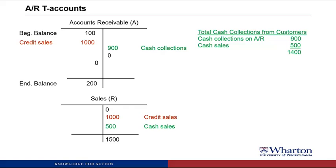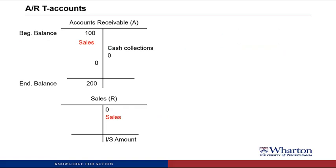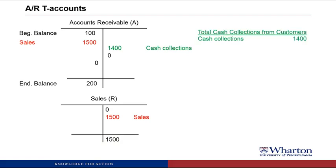The good news is all we have to do is use total sales instead of credit sales and everything will work. Going back to the example — beginning balance 100, ending balance 200, total sales $1,500 — we plug total sales into accounts receivable and solve: $100 plus $1,500 minus $200 gives cash collections of $1,400, which is the same number we got before. Essentially by putting total sales in accounts receivable, we're combining cash and credit sales, but the cash sales just show up as part of the cash collections. So you don't need to know credit sales — just plug in total sales and you'll get the right answer.